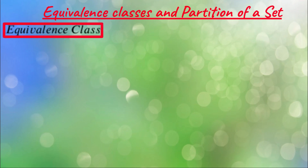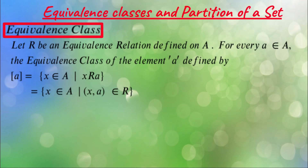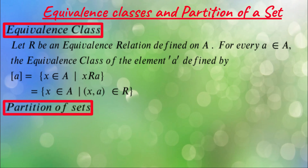Now, the definition: what is an equivalence class and what is a partition? If R is an equivalence relation defined on a set A, then for every element a belonging to A, the equivalence class of element a is defined as the set of all x belonging to A such that x is related to a — that is, the ordered pair (x, a) belongs to R. This is the equivalence class of a, and all elements' equivalence classes form a group.